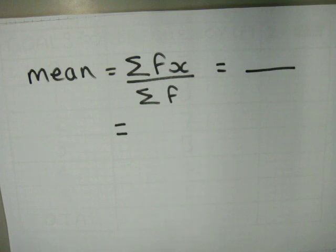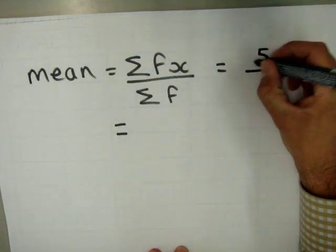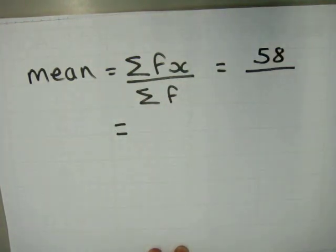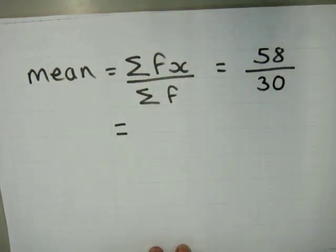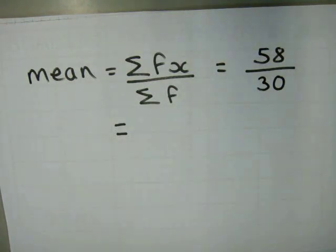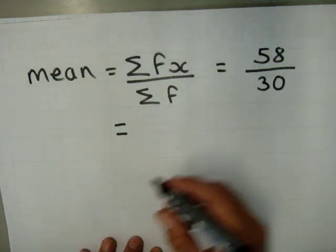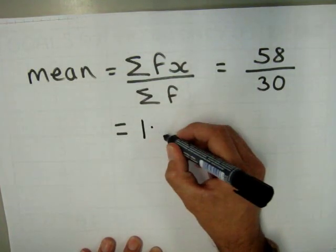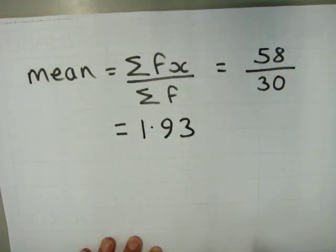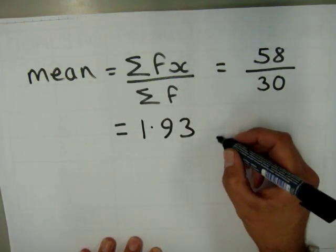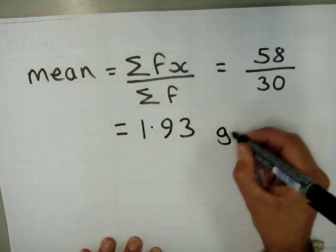So to find the mean, we take the sum of f times x, which was 58, and divide by the sum of our frequencies, which is 30. So 58 divided by 30 is 1.93. So the mean number of goals is 1.93 goals per game.